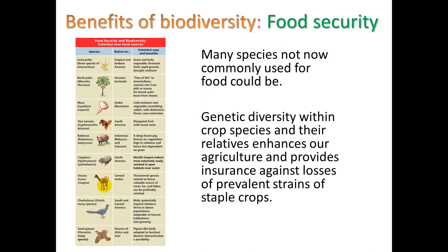I want to mention genetic diversity within crop species and their relatives. This enhances our agriculture and provides insurance against losses of prevalent strains of staple crops. In this country, we grow a lot of corn and wheat, and we grow a relatively few number of strains of those crops. We would like to have high biodiversity — high numbers of different types — so that if one strain becomes susceptible to a virus, perhaps another strain of the same species may have resistance to it, and we can rely on that.